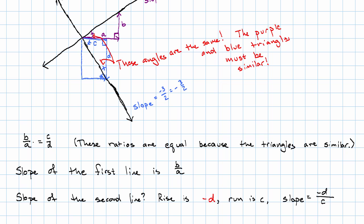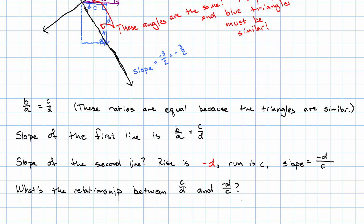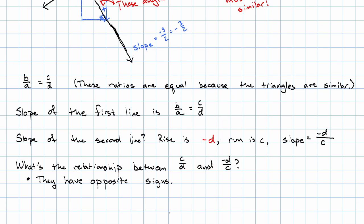The slope of the first line, B over A, because of the similar triangles is equal to C over D. What's the relationship between the numbers C over D and negative D over C? Well, they have opposite signs from each other and they are reciprocals of each other.